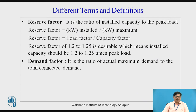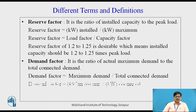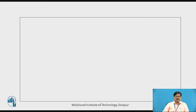The demand factor is the ratio of actual maximum demand to the total connected demand. Maximum demand is always less than total connected demand. In equation form, the demand factor equals kilowatts maximum divided by kilowatts connected.